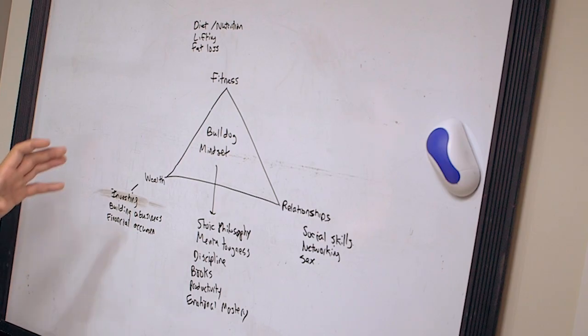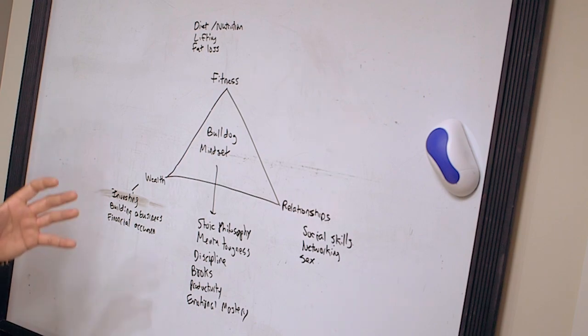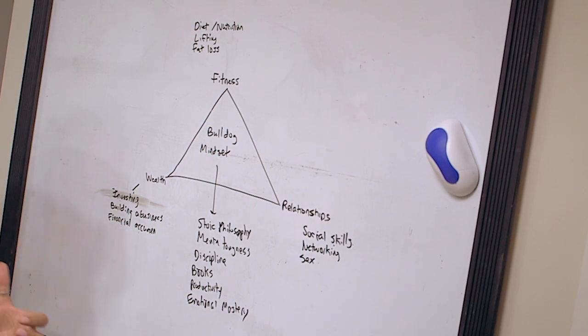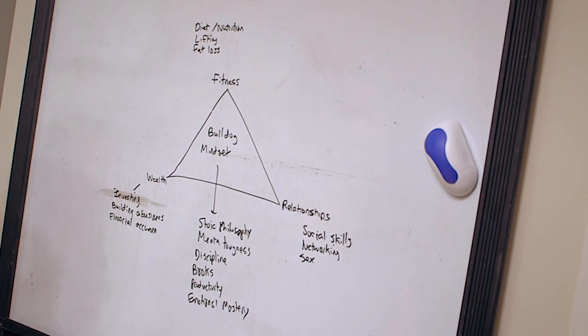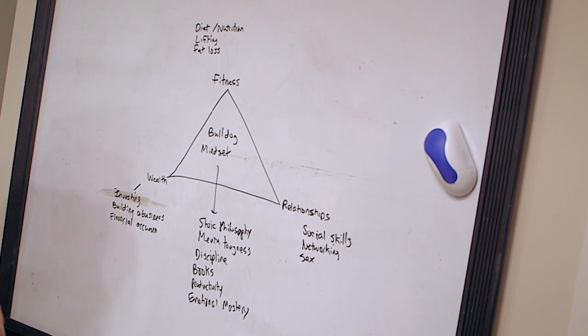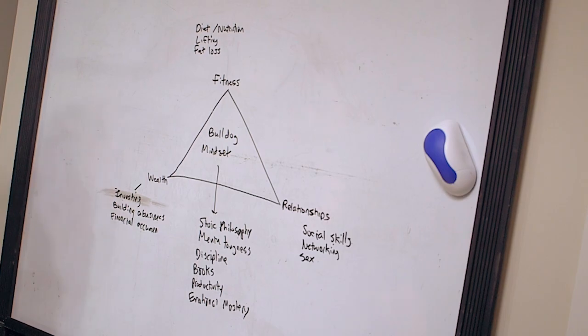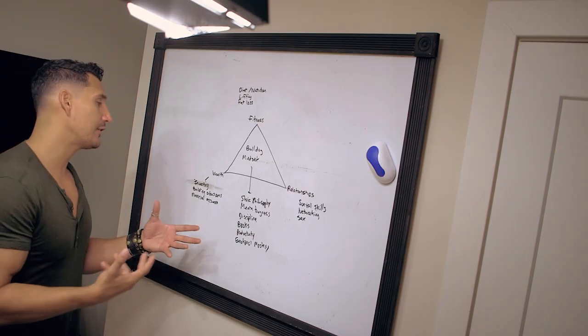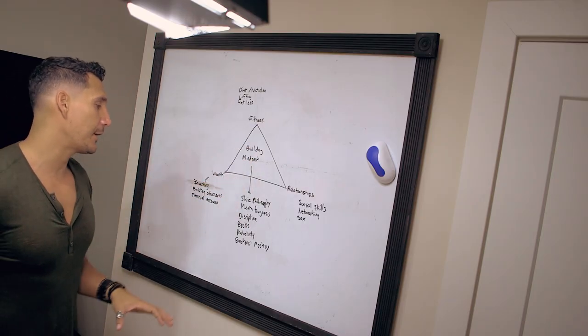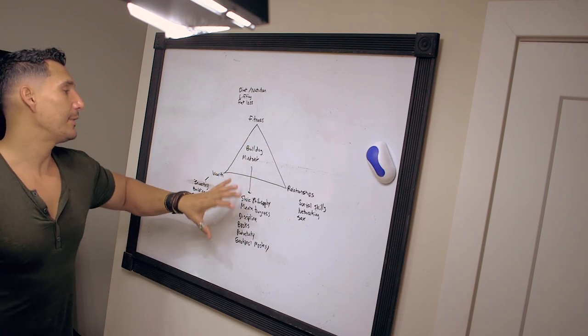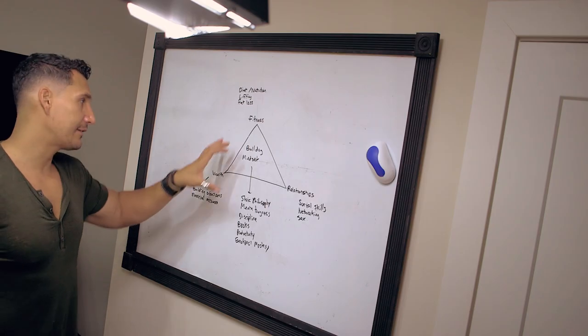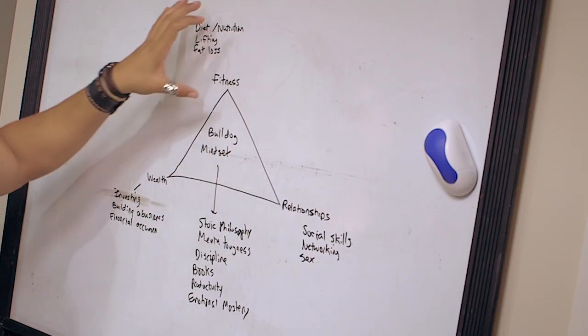Essentially, this bulldog mindset is really the core of what I've been teaching here because everything originates around having the mindset of persistence, consistency, commitment, mental toughness, discipline, all of these things. This stoic philosophy, emotional mastery. Productivity falls into this because that's a byproduct of having this mindset. This mindset is the thing that gets you all these other things.